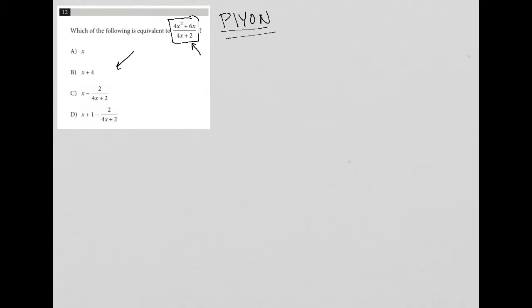So the way we use the strategy is we make up a number for x. I like to start with 2. So if I say x equals 2, then the next step is to plug that number into the question.